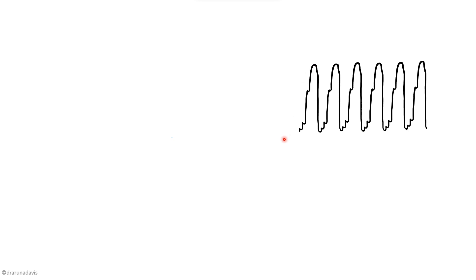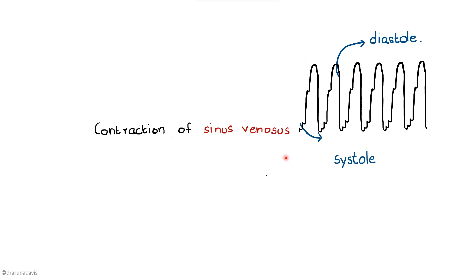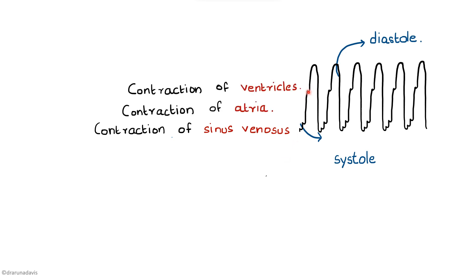This is the normal cardiogram and as you can see there are many tiny waves. The up stroke is the systole whereas the down stroke is the diastole. In the systole there are many small waves representing the contractions of each chamber of the frog's heart. The first small wave is caused by the contraction of the sinus venosis, then the atria, then the ventricles, and finally the bulbus arteriosus.